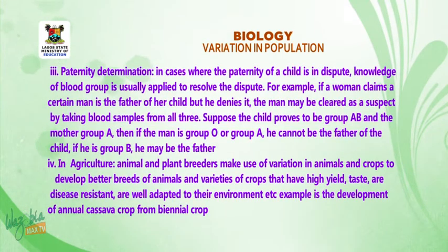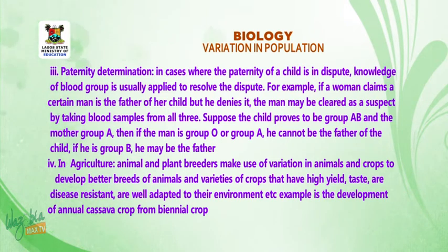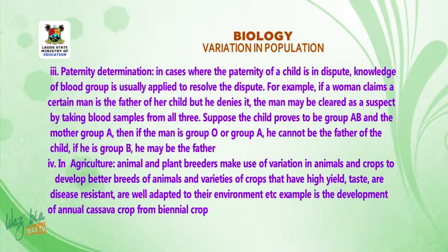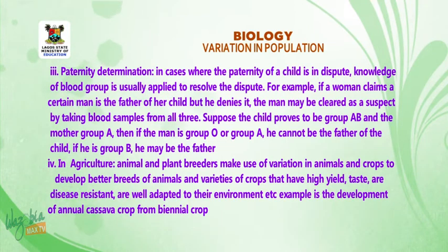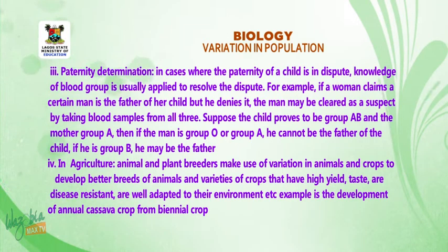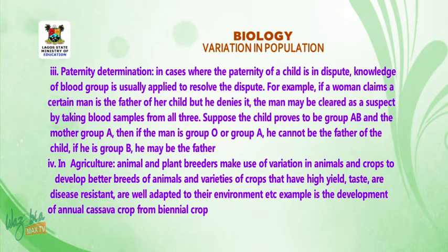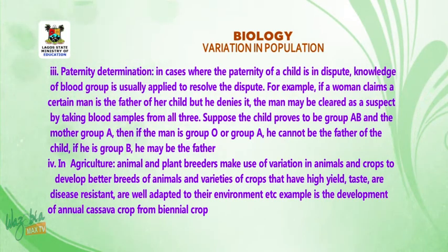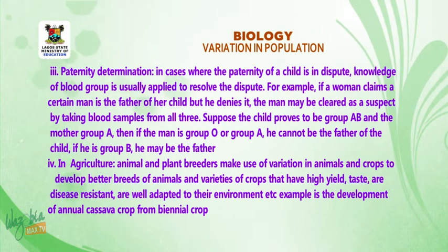3. Paternity determination. In cases where the paternity of a child is in dispute, knowledge of blood groups is usually applied to resolve the dispute. For example, if a woman claims a certain man is the father of a child but he denies it, the man may be cleared as a suspect by taking blood samples from all three. Suppose the child proves to be group AB and the mother group A — if the man is group O or group A, he cannot be the father of the child; if he is group B, he may be the father.